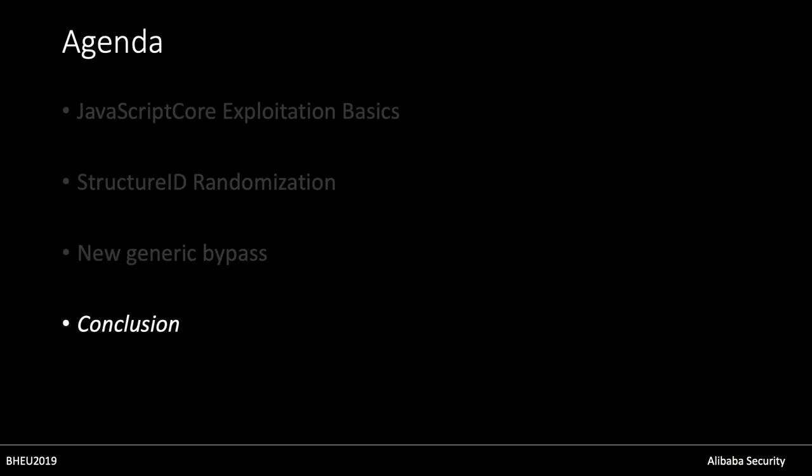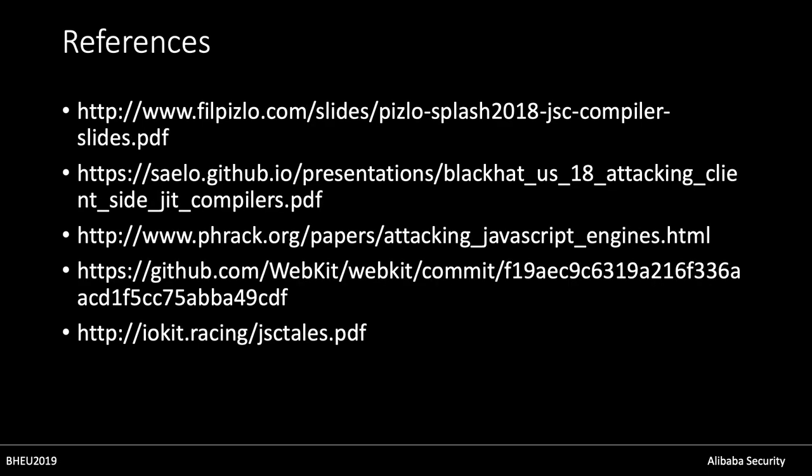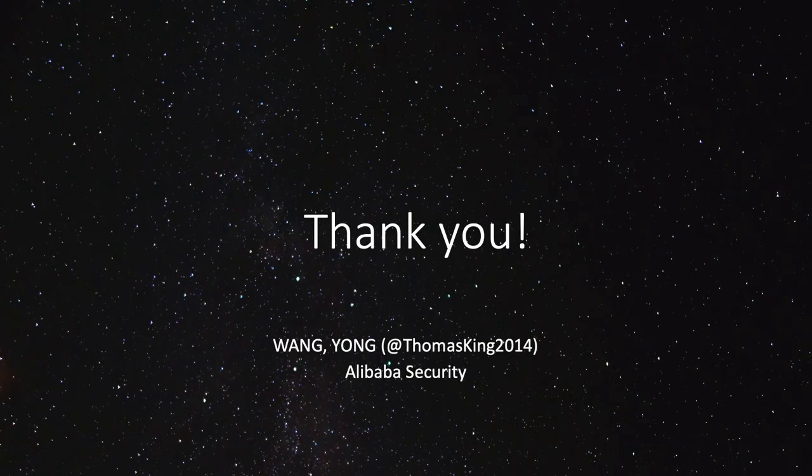Cool. The last part — takeaways. The costs of JavaScript exploitation have been discussed. Structure ID randomization has been fully discussed. The JS object compiler and the structure ID randomization module have been detailed. Here are the references. Thank you and enjoy the conference. I'll take your questions.